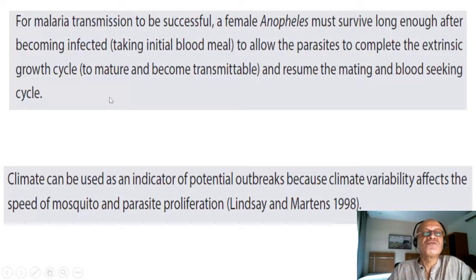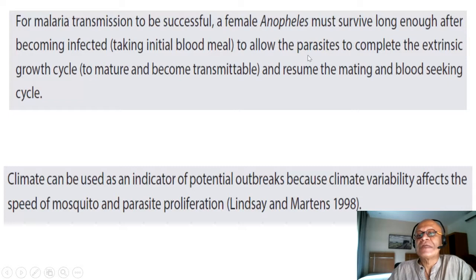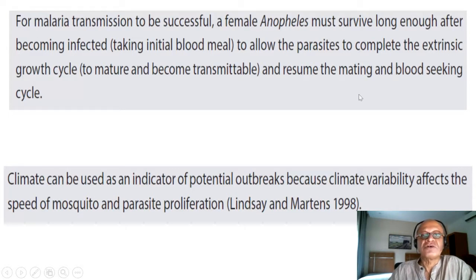Starting with malaria again: for malaria transmission to be successful, a female Anopheles must survive long enough after becoming infected — so taking an initial blood meal from a host already carrying malaria — to allow the parasites to complete the extrinsic growth cycle, to mature and become transmittable, and resume the mating and blood-seeking cycle.